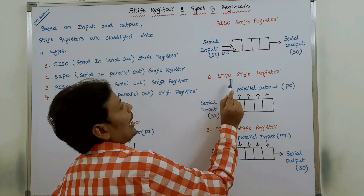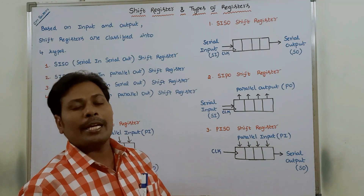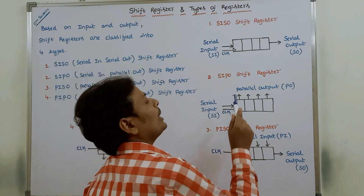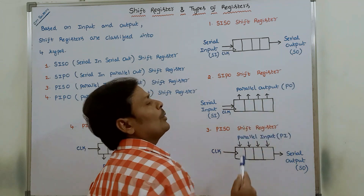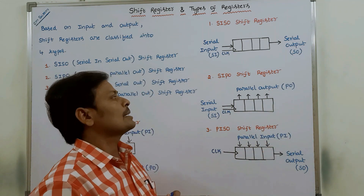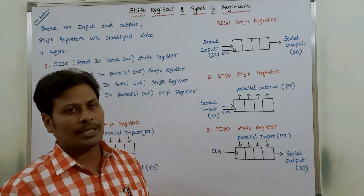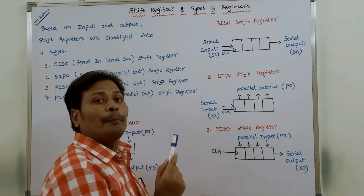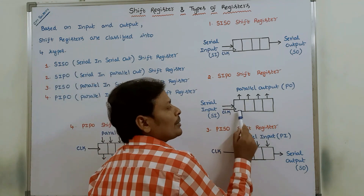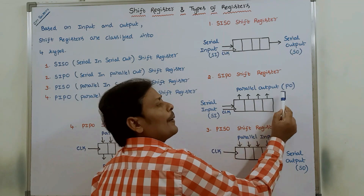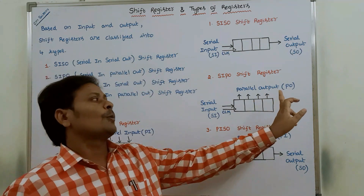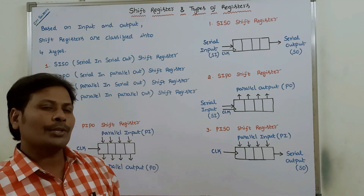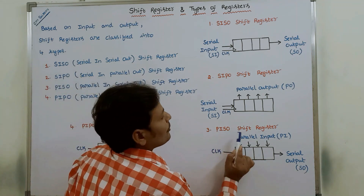A SIPO shift register allows only serial input and produces only parallel output. This shift register enters the input data in serial fashion bit by bit and leaves out the data from the shift register all at the same time, making it a serial in parallel out shift register.